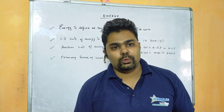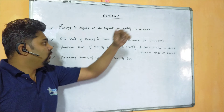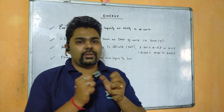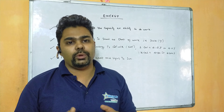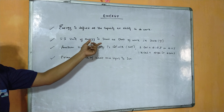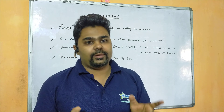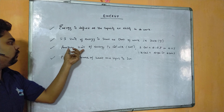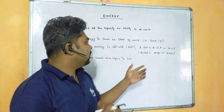Energy is defined as the capacity or ability to do work. To calculate how much energy is left or spent due to doing some work, it is expressed in Joules. The SI unit of energy is the same as that of work — Joule. Similarly, the SI unit of energy is also Joule.